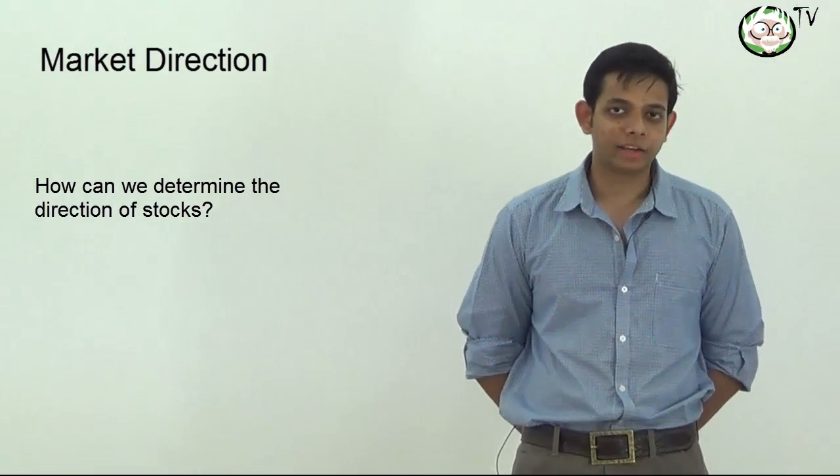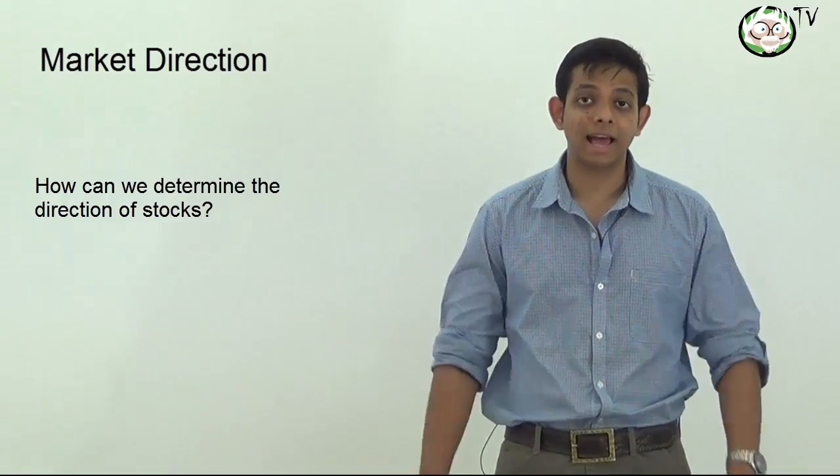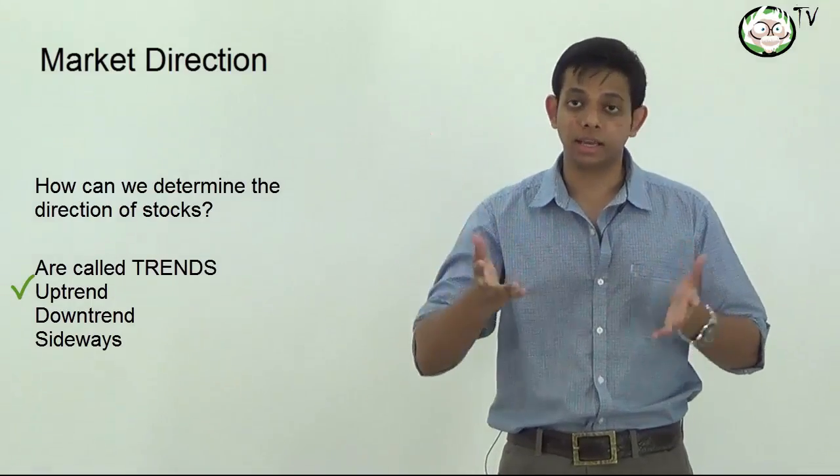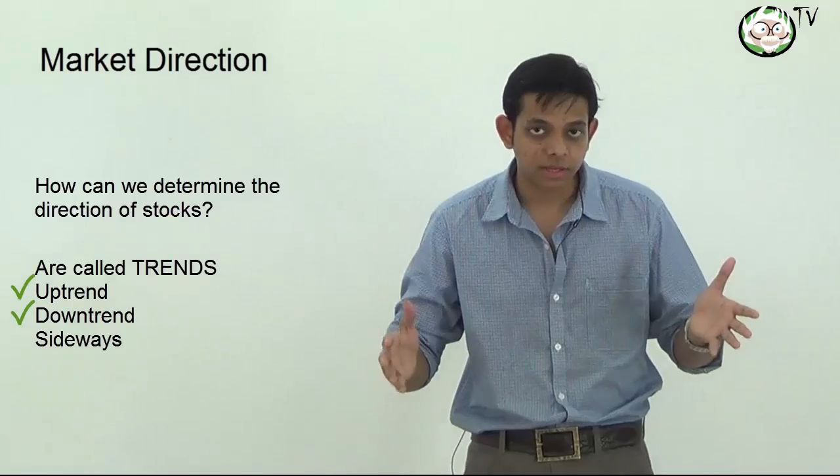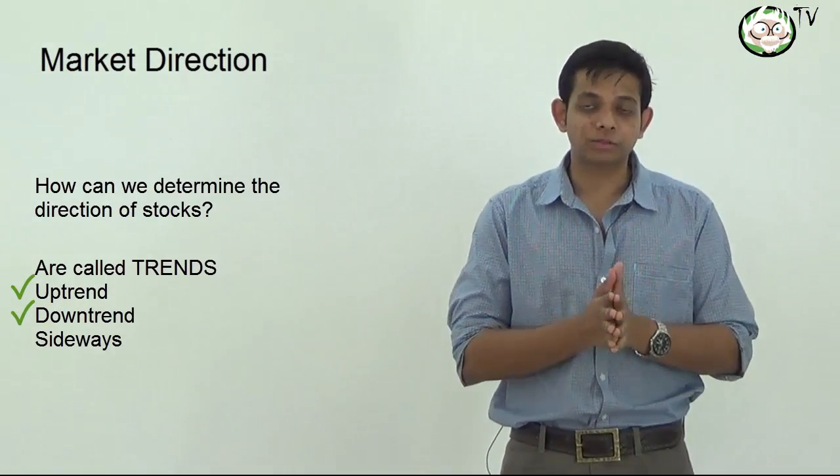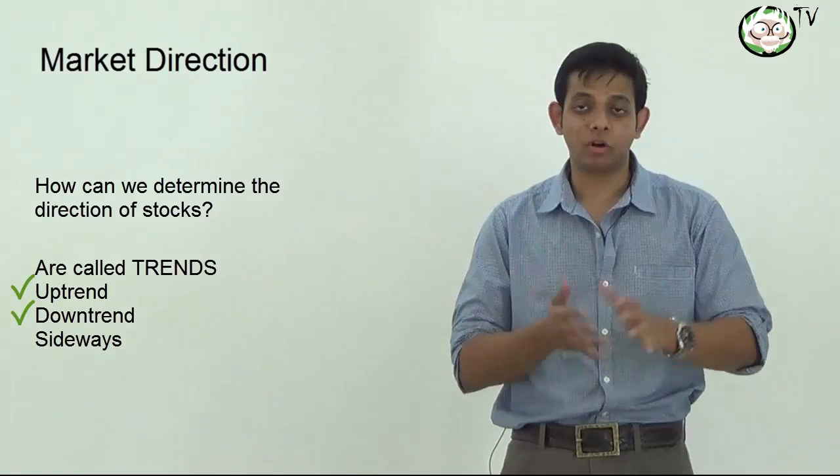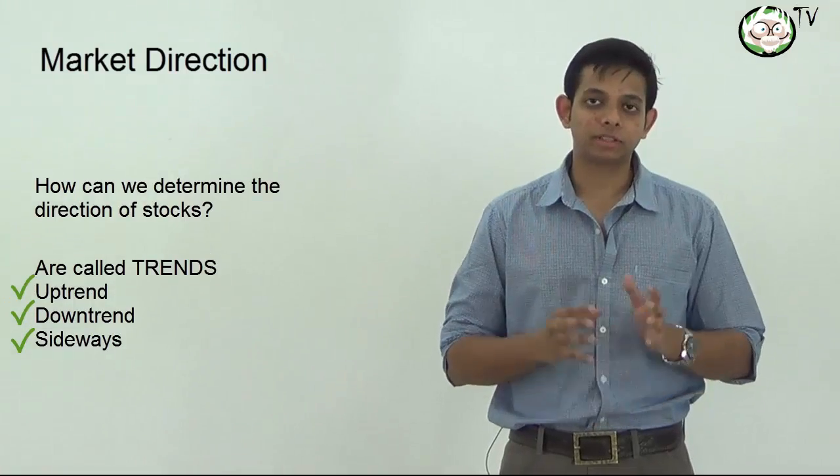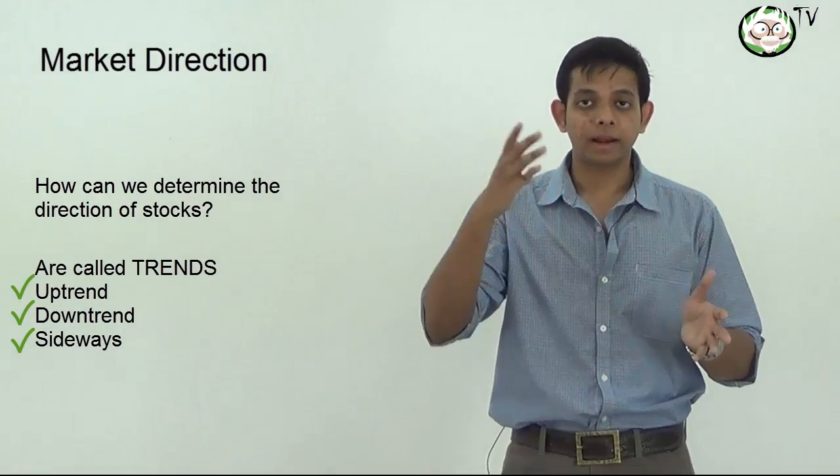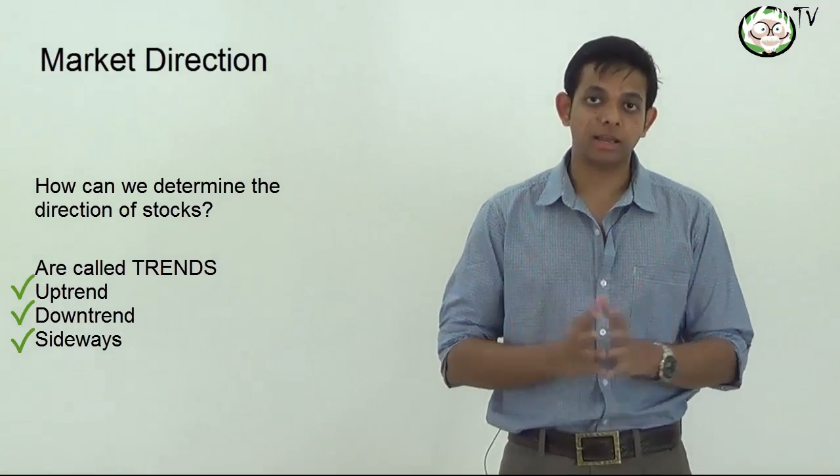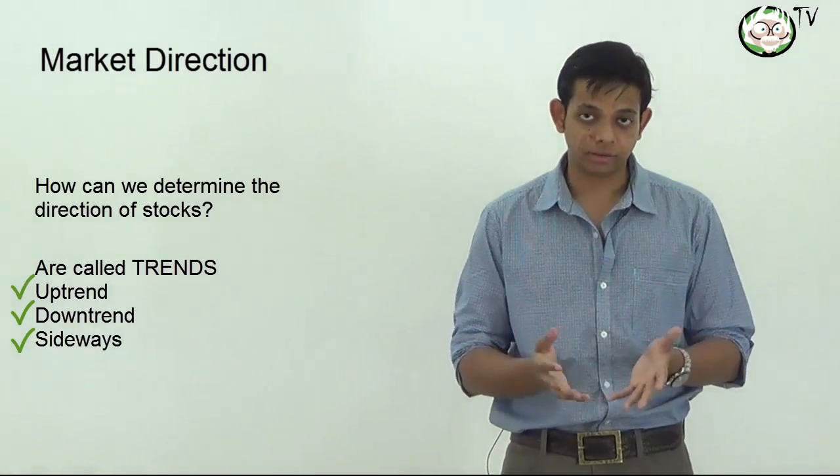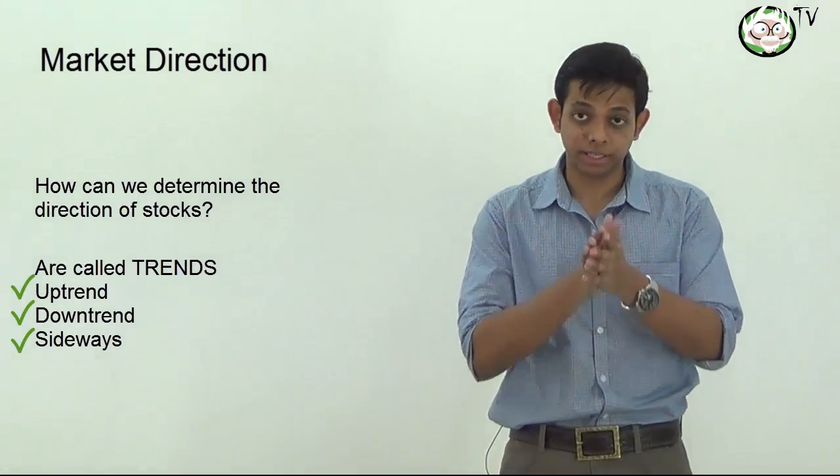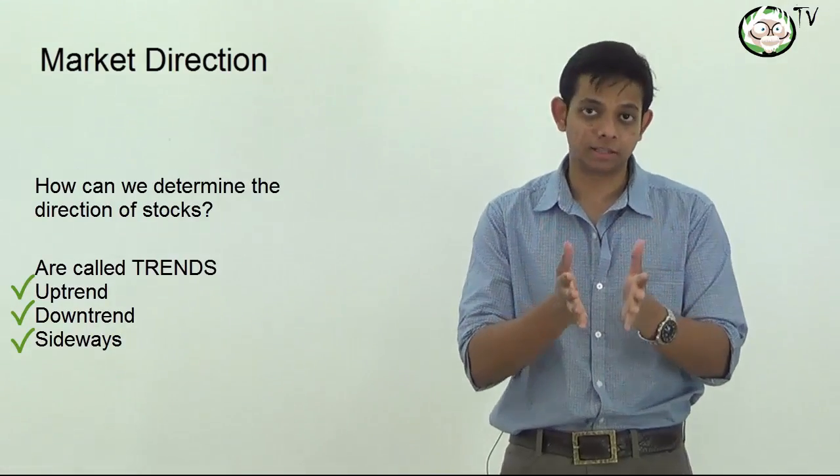Now market direction is actually referred to in the technical world as trends. So a stock moving upwards is in an uptrend and a stock moving downwards is in a downtrend. Sometimes stocks reach in a no-trade zone or sideways and this happens because as soon as markets go up, it forces a situation of supply and markets fall down or break down, forcing a situation of demand coming in. This was seen in the earlier half of December 2012 on the Nifty charts.